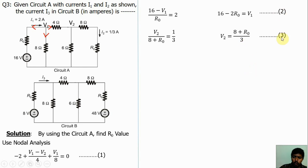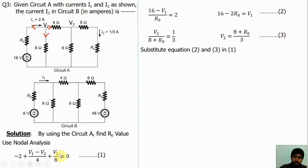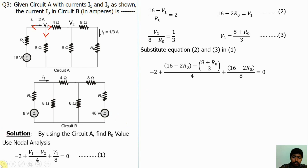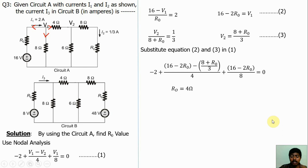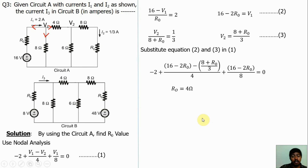Now substitute equations 2 and 3 into equation 1. Instead of V1, substitute 16 minus 2R0; instead of V2, substitute (8 plus R0)/3. Simplifying this equation, we get R0 equals 4 ohms. So R0 is now known — from circuit A we can find the R0 value.